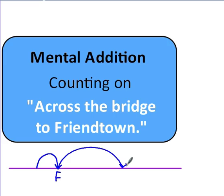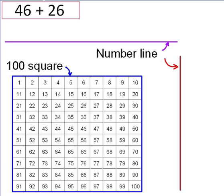Okay, let's have a look at some examples in practice. 46 plus 26. Here's a horizontal number line, a vertical number line, and a 100 square to help me with my mental addition.